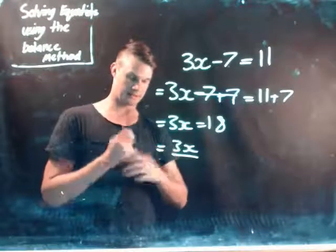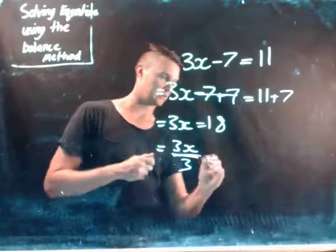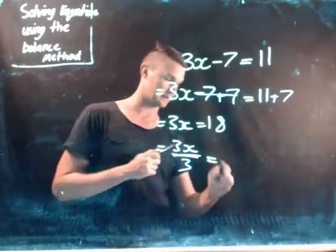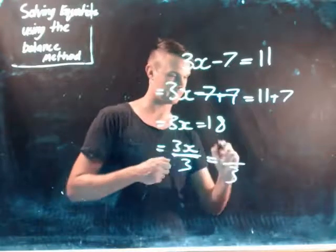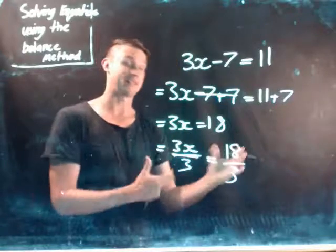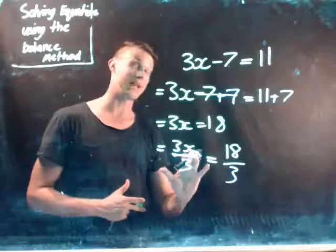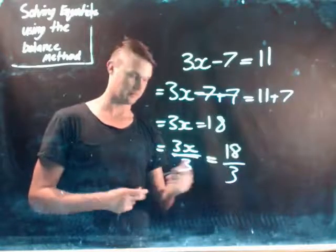So 3x divide by 3 equals, whatever I need to do on the same other side, 18 divide by 3. So I've broken it down and I'm starting to balance it out. So the next time I should just have my answer.